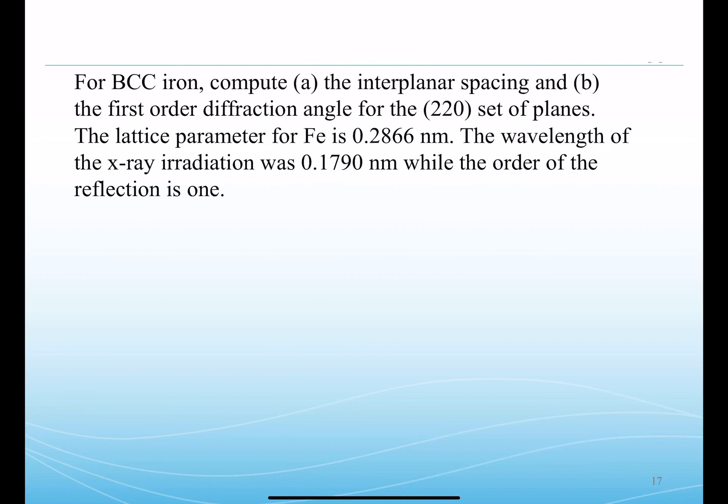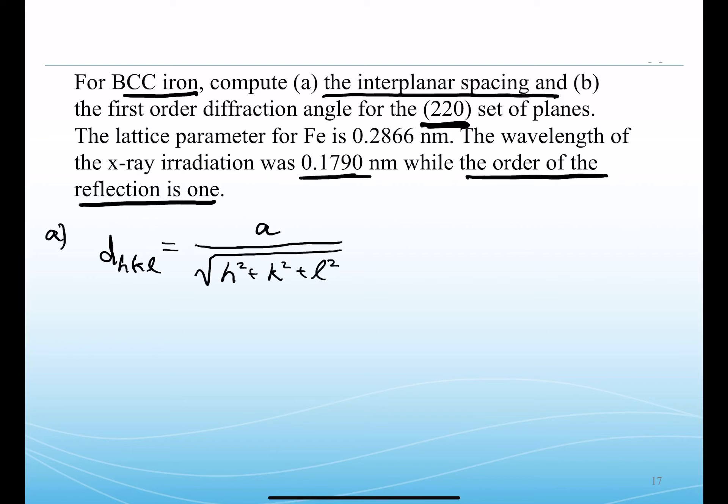Let's take a look at an example question where we're asked to investigate body-centered cubic iron and compute the interplanar spacing and the first order diffraction angle for a 220 set of planes. We're also given the lattice parameter, so this would be a, and the lattice parameter value is 0.2866 nanometers. We're given the x-ray radiation that was used, so 0.179 nanometers is lambda, and we're told that the order of the reflection is 1, so this is our n value. To address part A, we need to calculate the interplanar spacing. Our equation for that was d_hkl is a function of the lattice parameter a divided through by the square root of h² + k² + l².